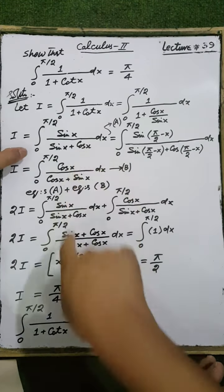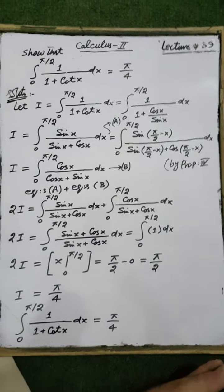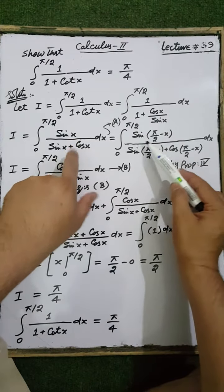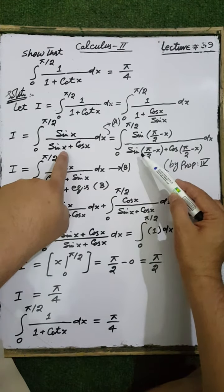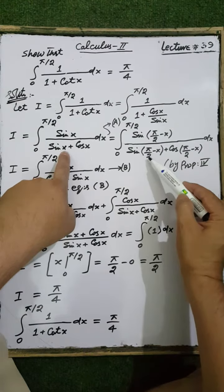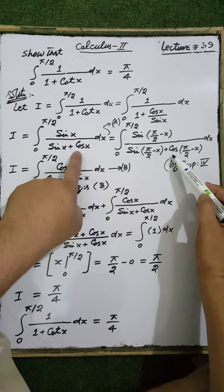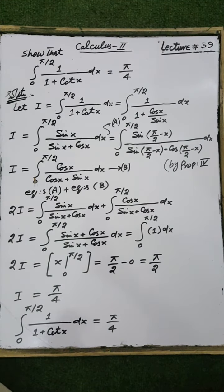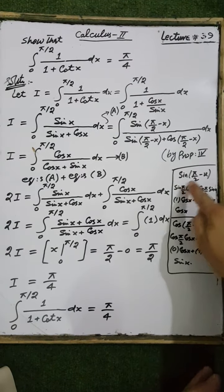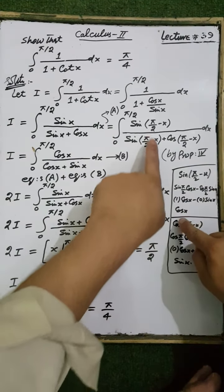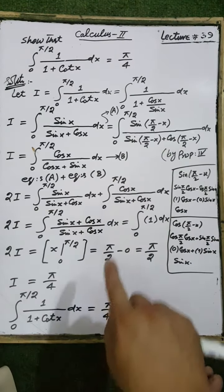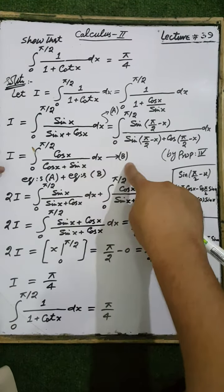The lower limit is 0 and the upper limit is π/2. According to integral property number 4, replace the variable x by the upper limit minus x: sin(π/2 - x) divided by sin(π/2 - x) plus cos(π/2 - x). By the fundamental trigonometric identities, sin(π/2 - x) equals cos(x) and cos(π/2 - x) equals sin(x). This gives equation number two.